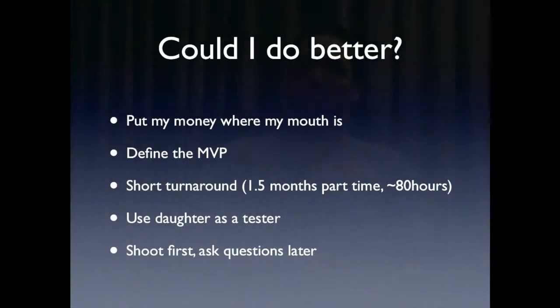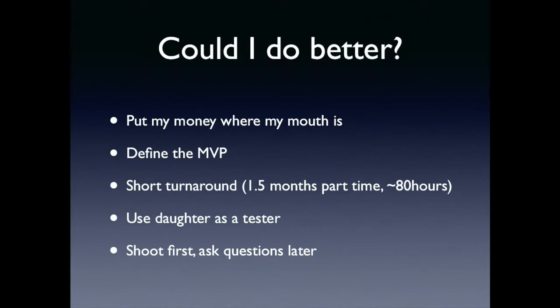So could I do better? I thought I'd put my money where my mouth is — I'm always talking about how bad these apps are, so I thought I should probably try and do one. I defined a minimum viable product, which is basically the simplest possible thing that a child might want to interact with, with the least distractions possible. Short turnaround time — I spent about one and a half months, about 80 hours on this. There's a bit of cheating involved in that I leveraged some code I'd already done elsewhere.